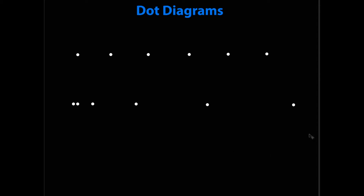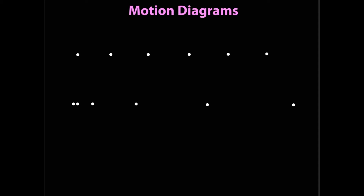At this point we're going to make a slight change, because dot diagrams are useful but they don't display a few things that are really important — especially if you want to convey information to your teacher or AP exam grader. So we're going to take these diagrams and change them from dot diagrams to what are called motion diagrams, which add a little more information.